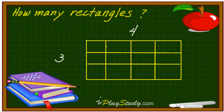Then you just multiply. So three times four, which is twelve. Wait a minute — twelve rectangles. That's right.